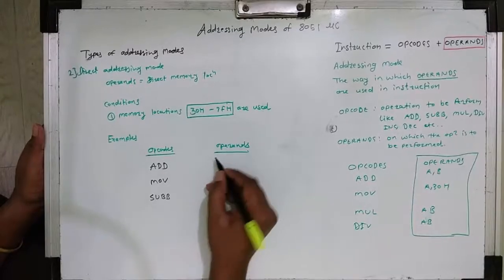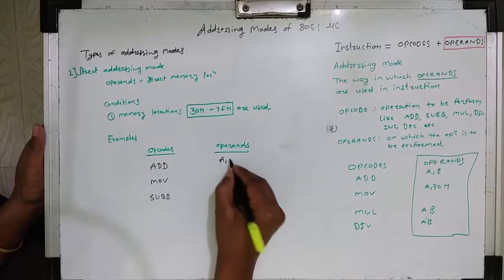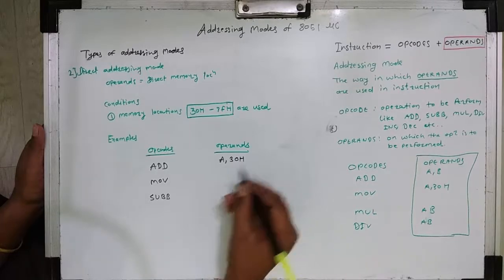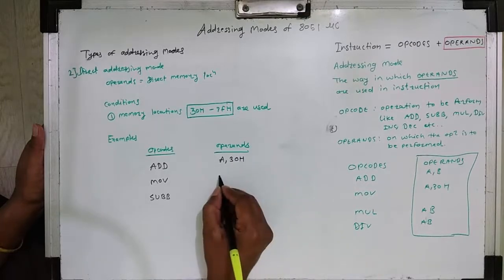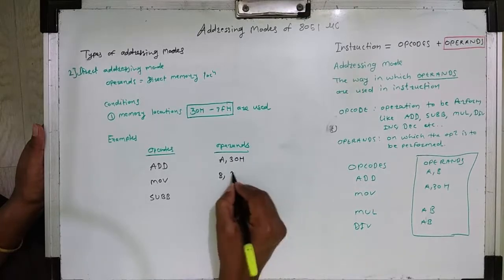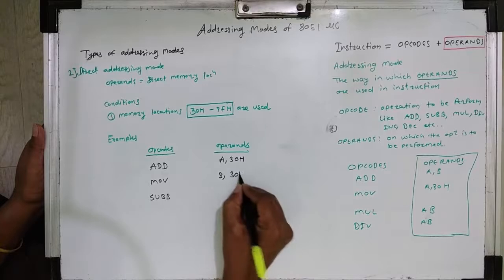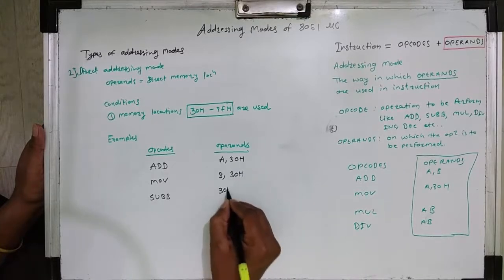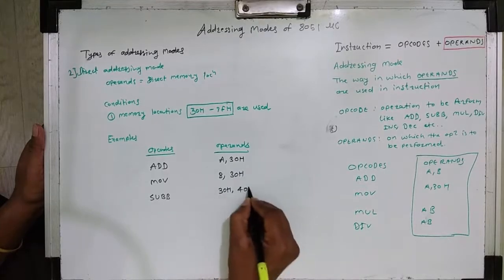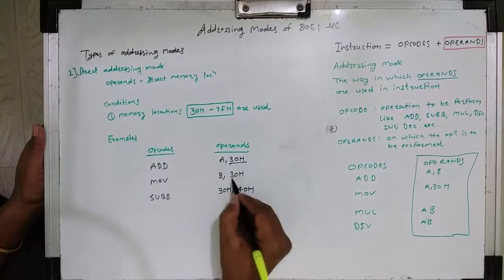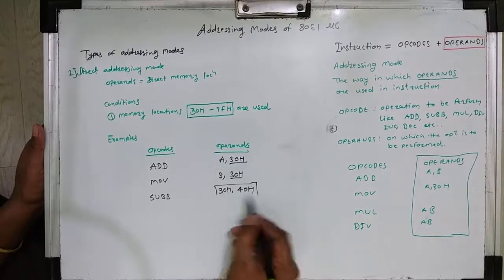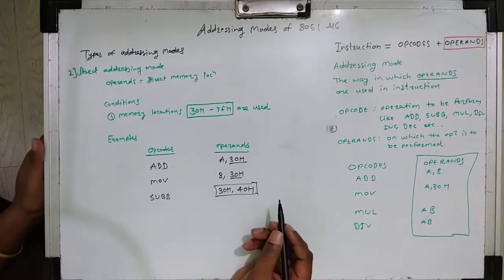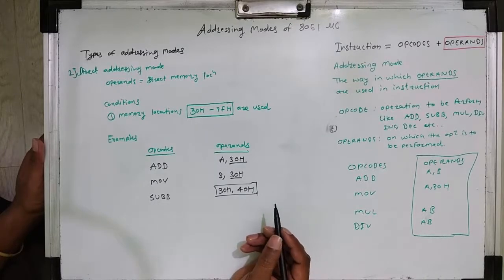Operational codes like MOVE or ADD are used with operands that are only memory locations. For example: ADD A, content of memory location 30H; MOV B, content of memory location 30H; SUB content of memory location 40H from the contents of memory location 30H.